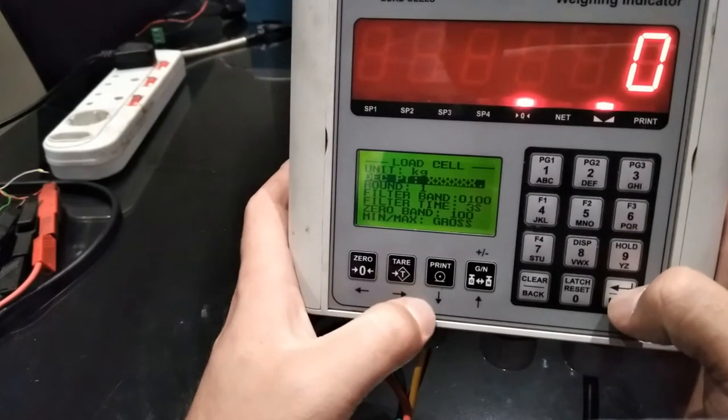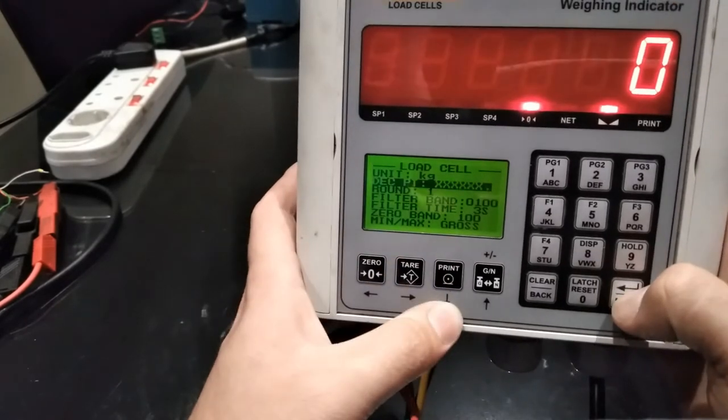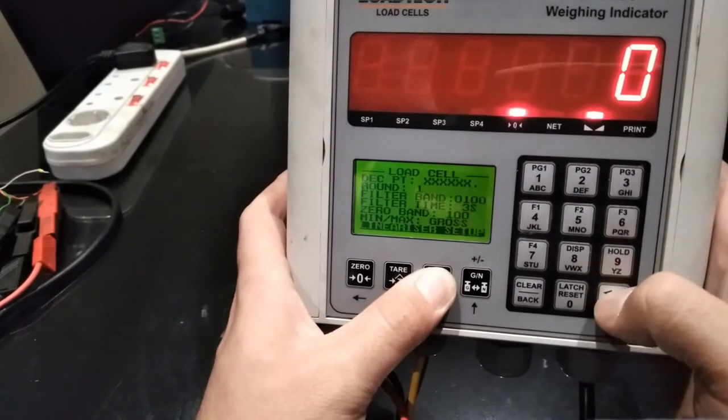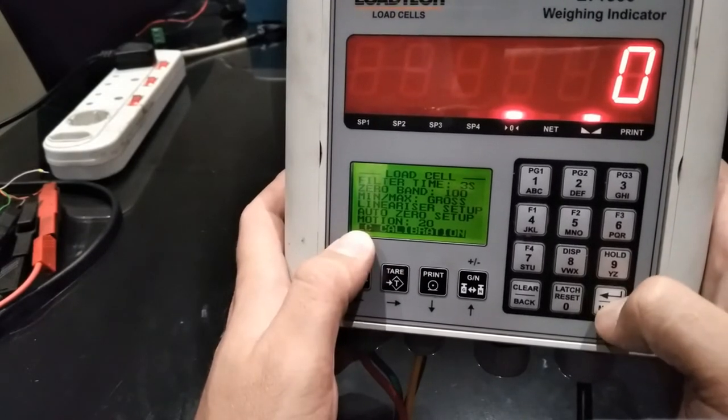Next is the decimal point. You'll move the decimal point the same way by using left and right. Once you've set everything up, go to the bottom of the menu to see calibration and enter.